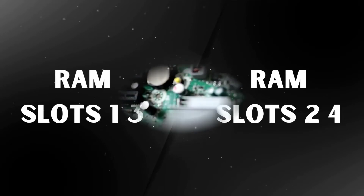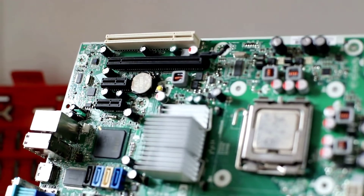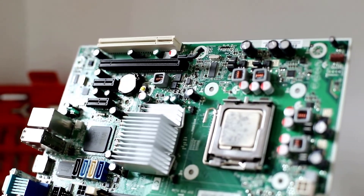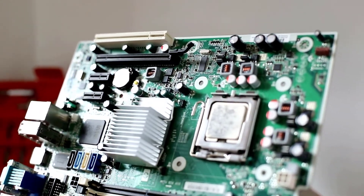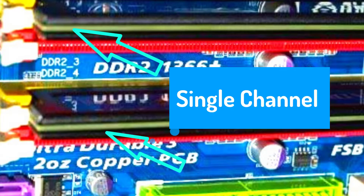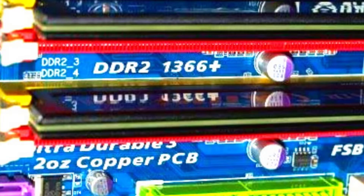Different types of motherboards have different RAM slot recommendations. The 2nd and 4th slots are usually for dual channel, and on the contrary, the 1st and 3rd slots are for single channel slot functioning.